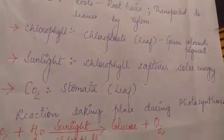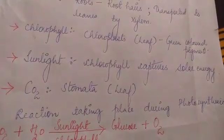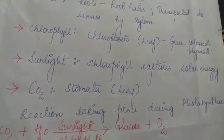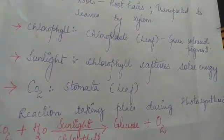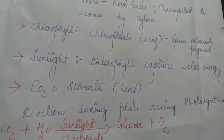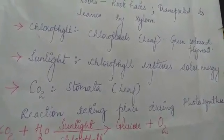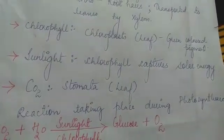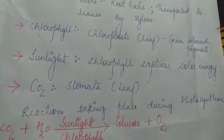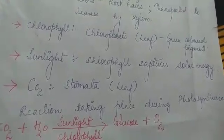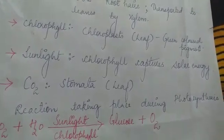Next comes chlorophyll. Chlorophyll is seen in the chloroplast, that is, it is seen in the leaf. Chlorophyll is a green colored pigment — that's why leaves have a green color. This chlorophyll captures the solar energy from sunlight. Carbon dioxide is absorbed from the atmosphere by stomata, which are tiny pores seen in the leaf.